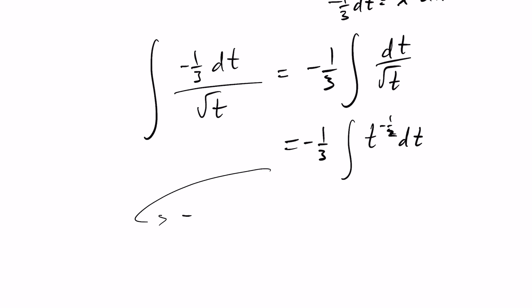So integrating this, we have minus 1 third out front. And I need to think of something whose integral, after taking its derivative, I should say, becomes t to the minus 1 half.